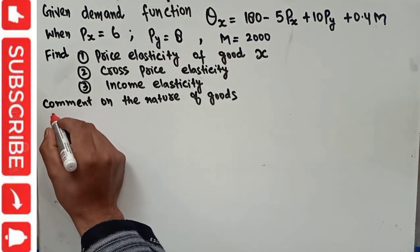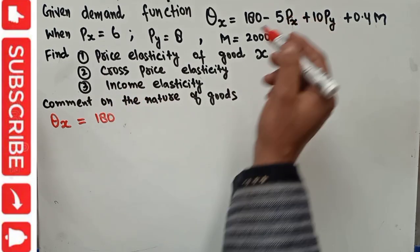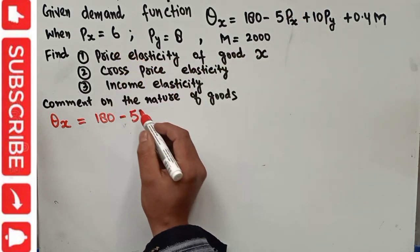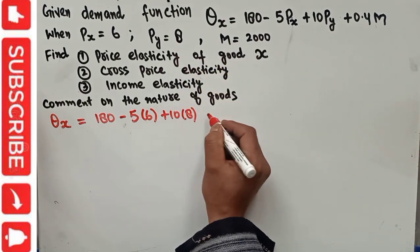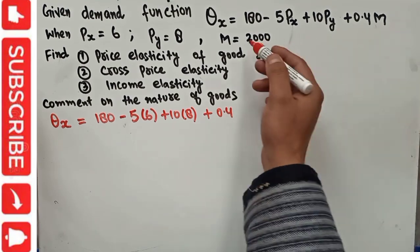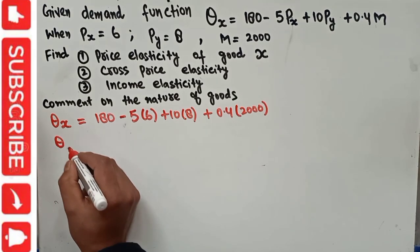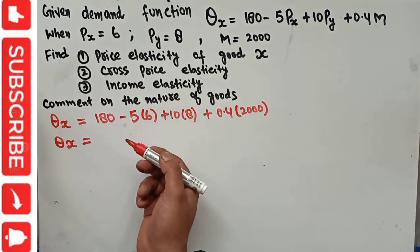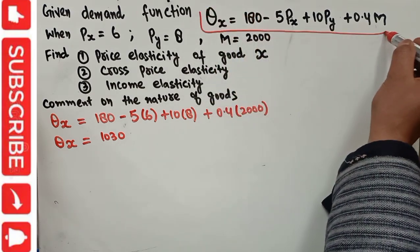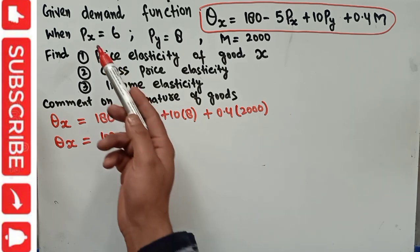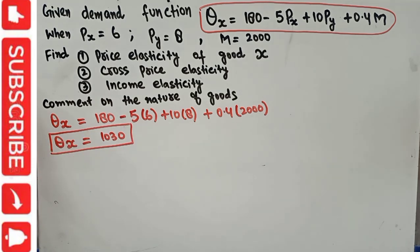The demand function is: quantity demanded of good X equals 180 minus 5 times the price of good X plus 10 times the price of good Y plus 0.4 times income M. Plugging in PX = 6, PY = 8, and M = 2000, we solve and get QX equal to 1030.